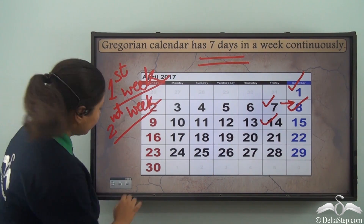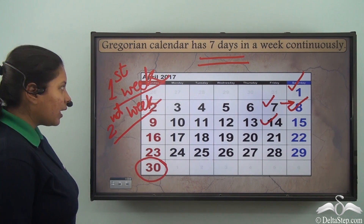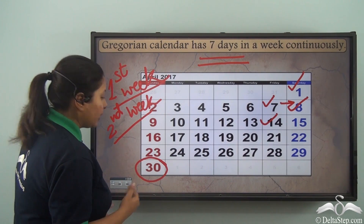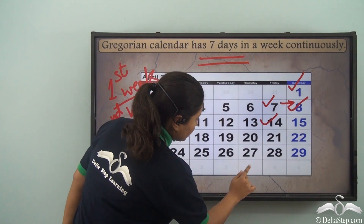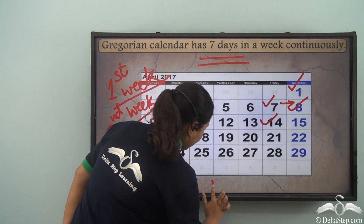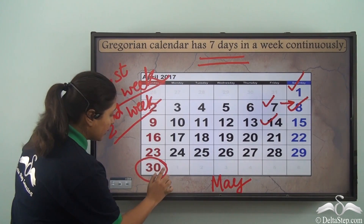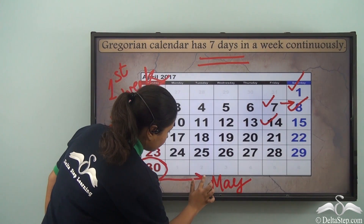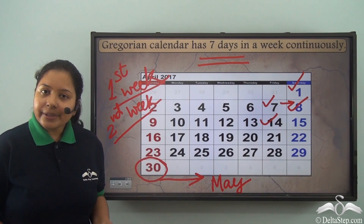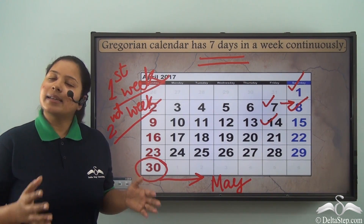What about the 30th? This is the end of the month, right? But do you think it ends there itself? Not really. You can see here 1, 2, 3, 4, 5, 6 — these are the dates of May that comes after April. So this has been continued. In the entire calendar, 7 days come again and again continuously.